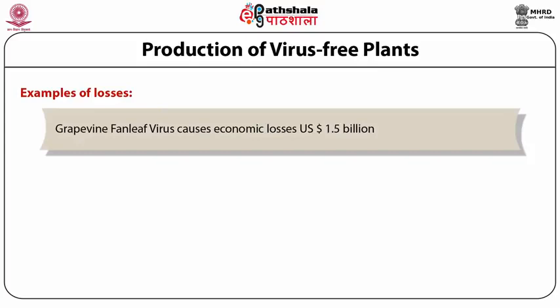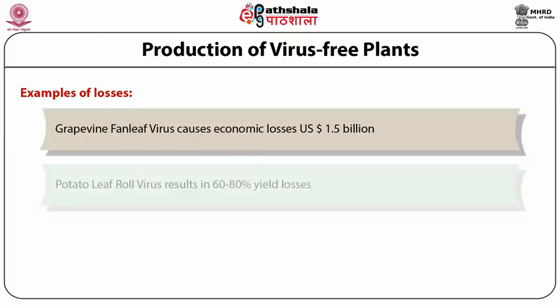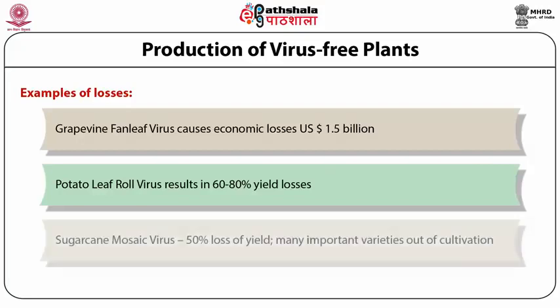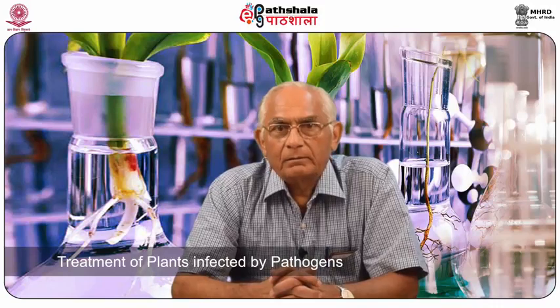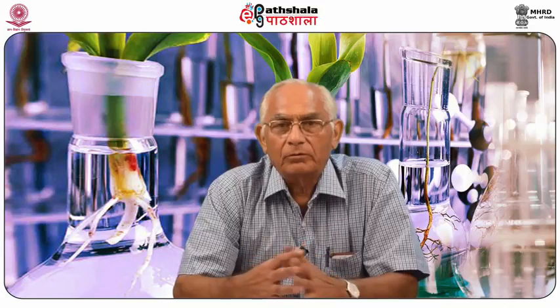The grapevine family virus causes economic losses to the tune of 1.5 billion US dollars — that is from one virus alone. The potato leaf roll virus results in 60 to 80 percent yield losses. And many important varieties of sugarcane have gone out of cultivation only because of the accumulation of virus over the generations. Treatment of plants infected by pathogens such as bacteria, fungi, and viruses is a matter of concern.